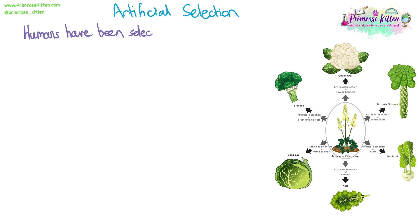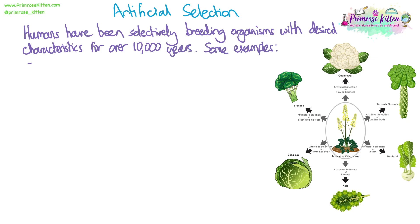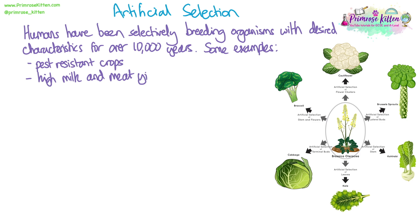Artificial selection. Humans have been selectively breeding organisms with desired characteristics for over 10,000 years. Some examples of organisms we've bred include crops that are resistant to pests, but also crops that are resistant to various treatments like herbicides to make sure that they can grow better and have an increased yield.